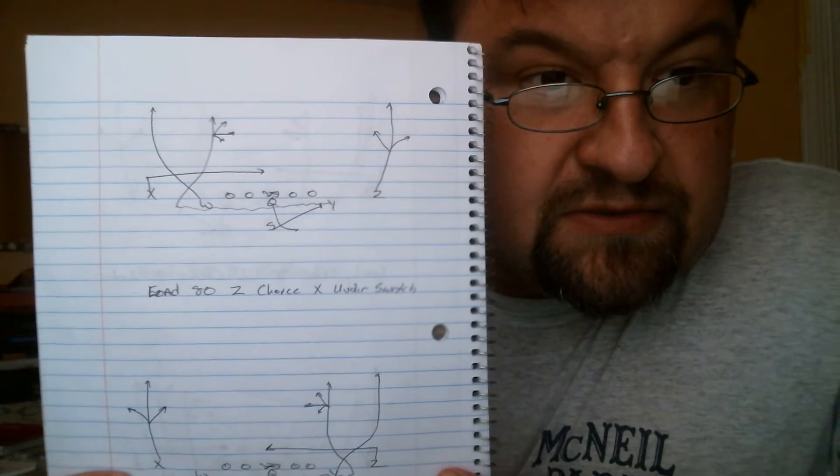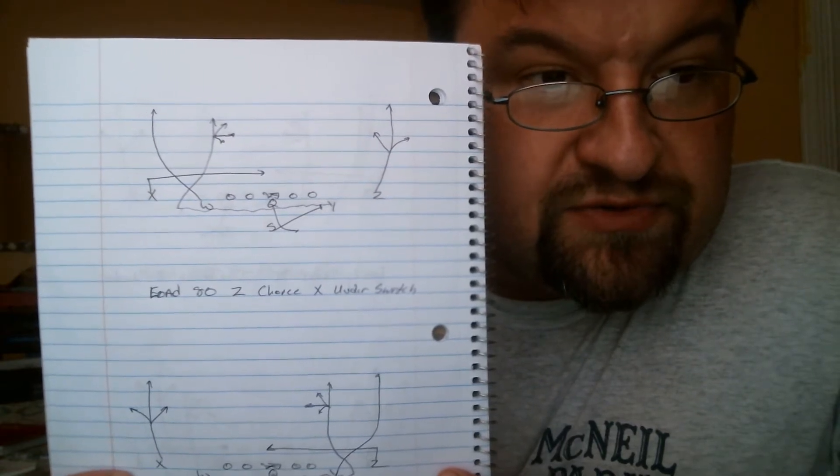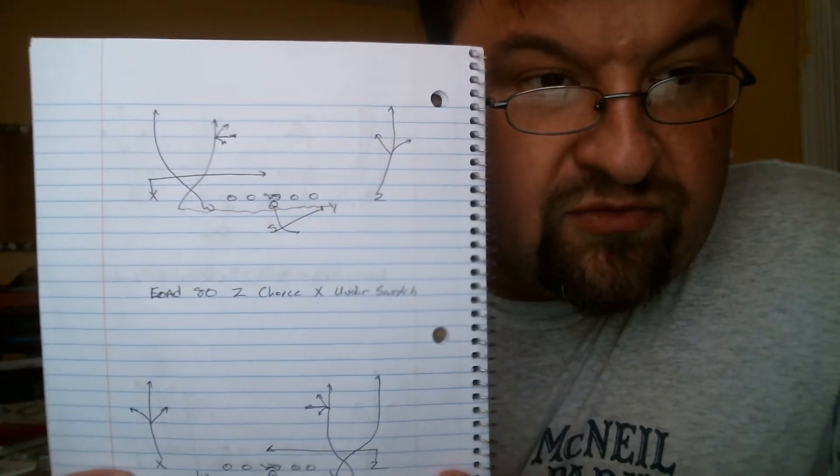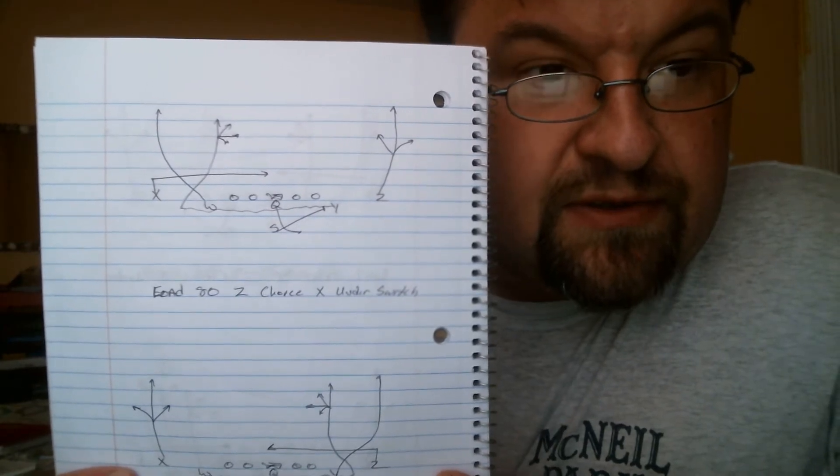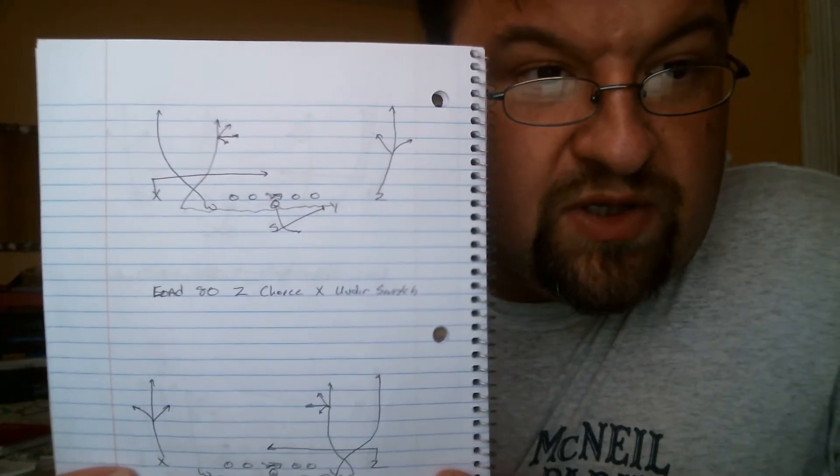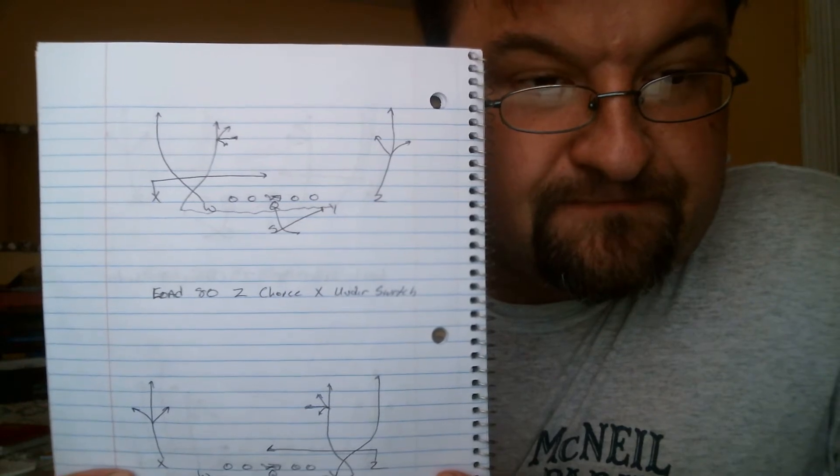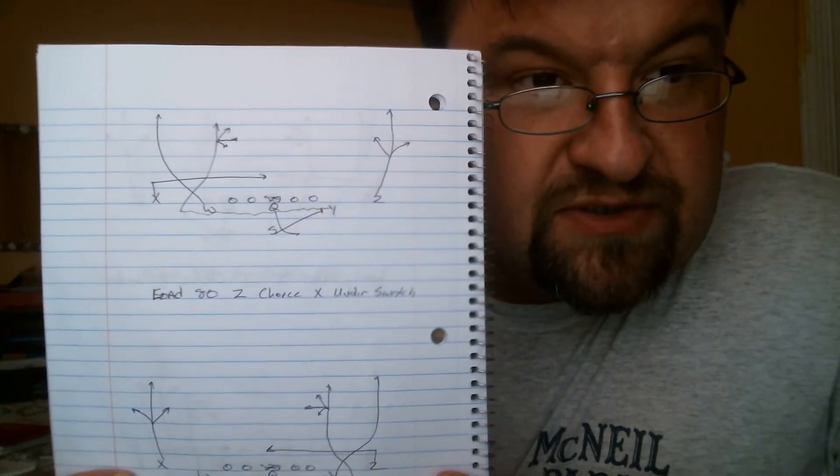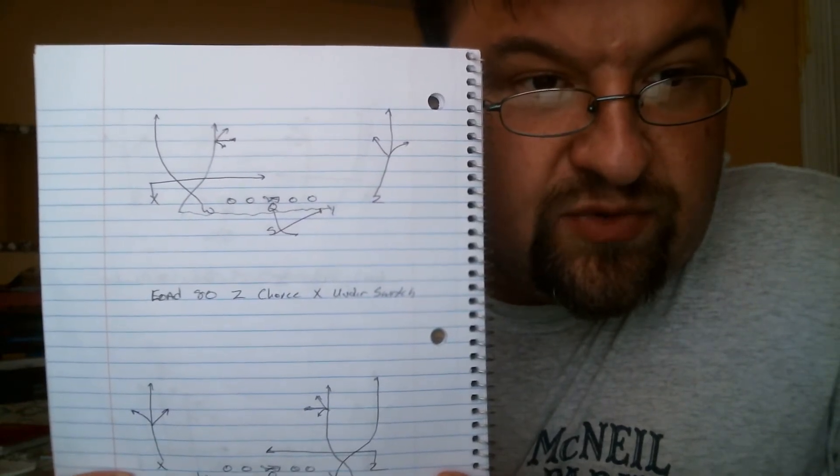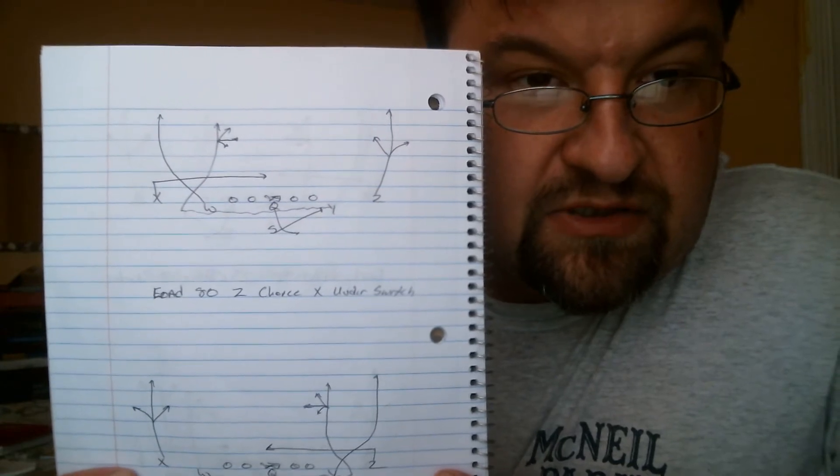I'm going to have X do a three-step drag route. Gets vertical three steps and attacks underneath. Wing is going to run a wheel streak. Y comes in motion and he runs a switch seam read. Z runs his choice route.